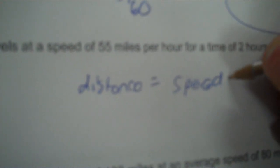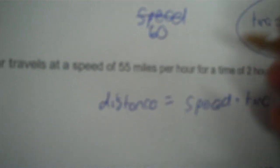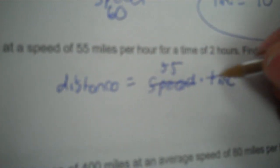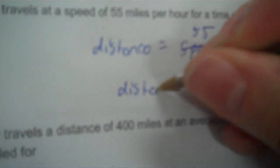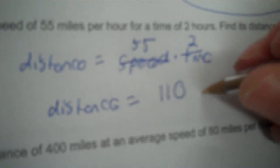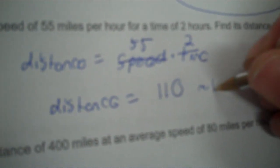A car travels at a speed of 55 miles per hour for a time of two hours — find the distance it traveled. Distance equals speed multiplied by time. The speed is 55 miles per hour and the time is two. 55 times two is 110. Distance is labeled as miles.